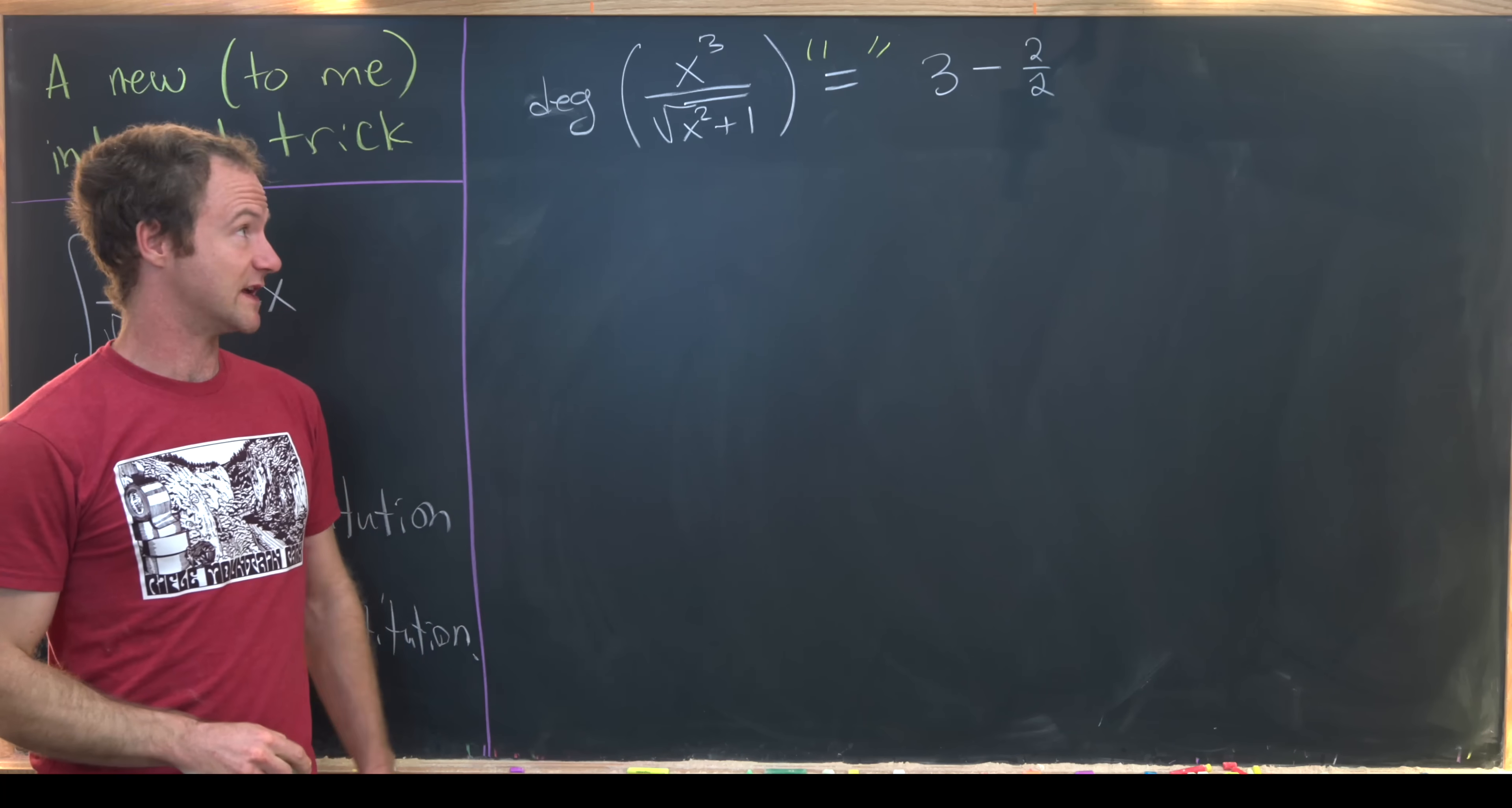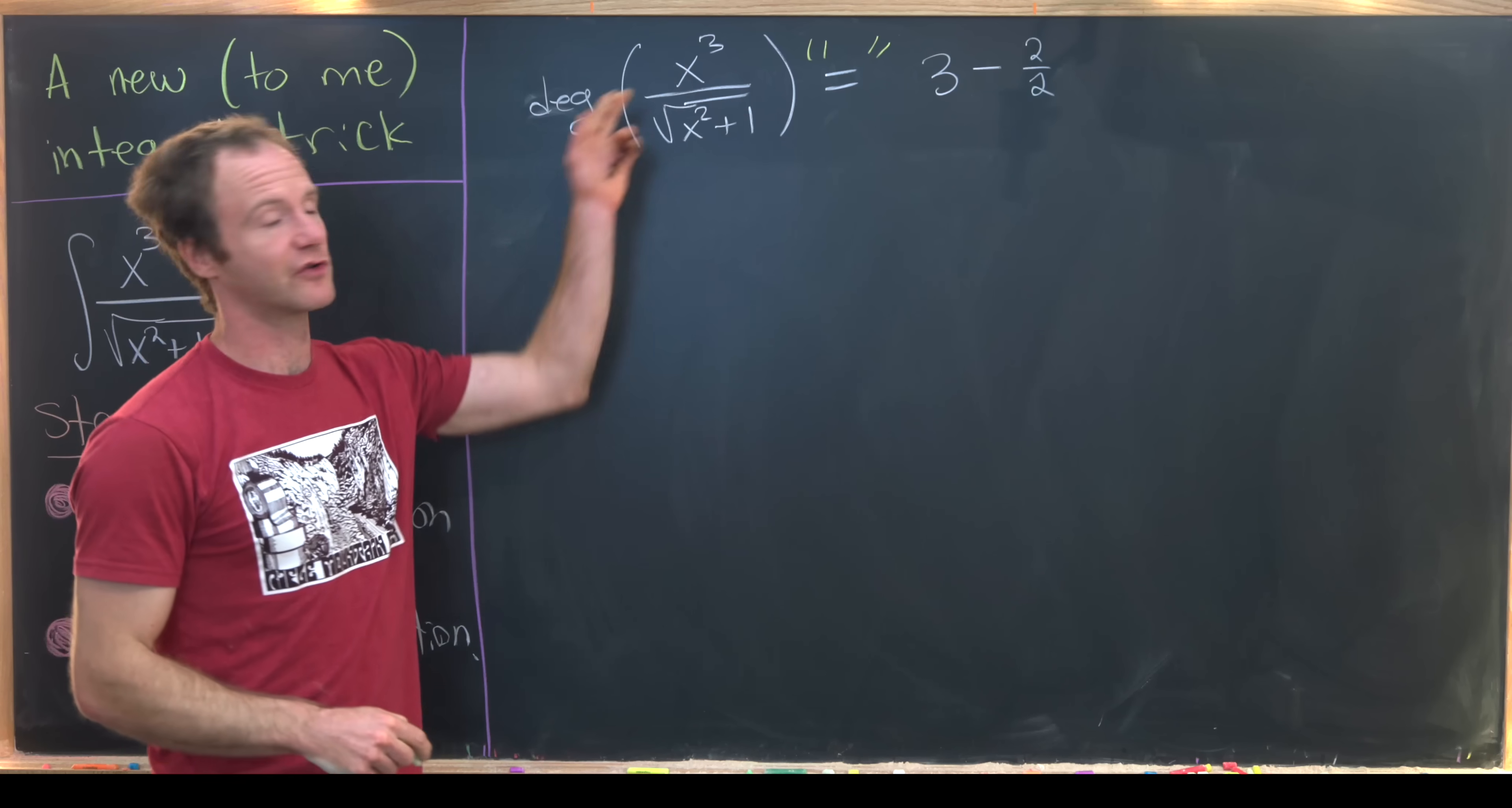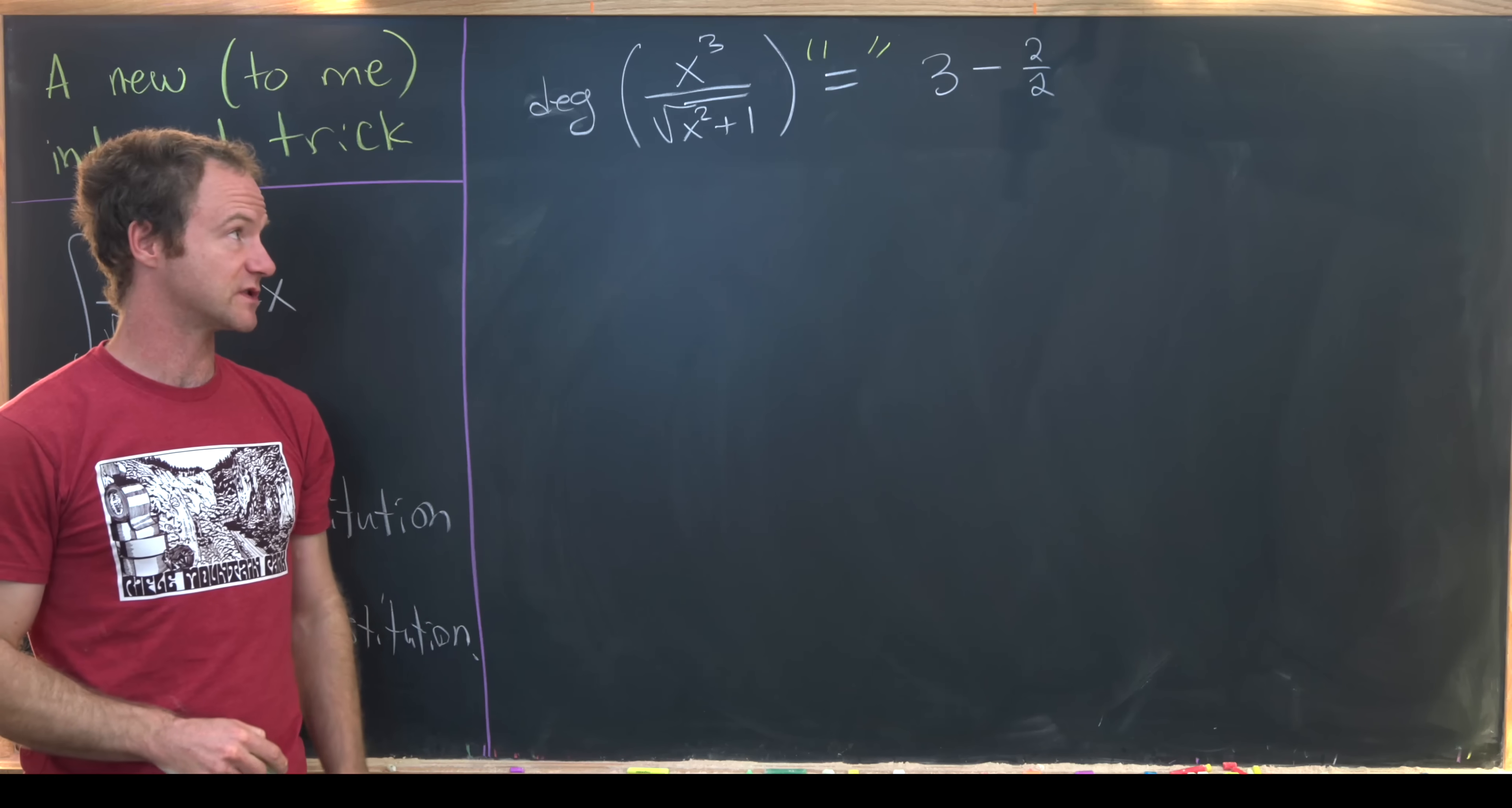It's going to be equal to 3 minus 2 over 2. So let's talk about why it's 3 minus 2 over 2. Well, the degree of the numerator is clearly equal to 3.